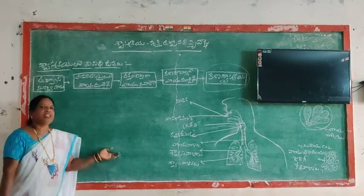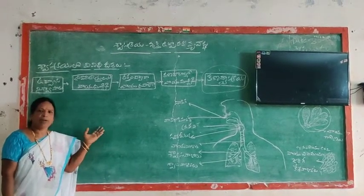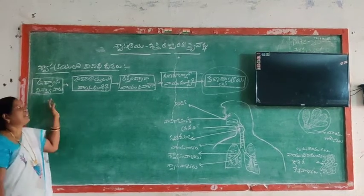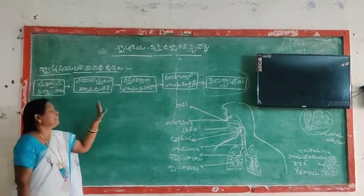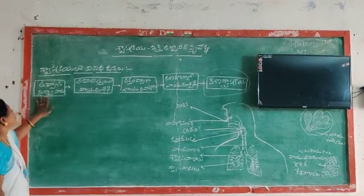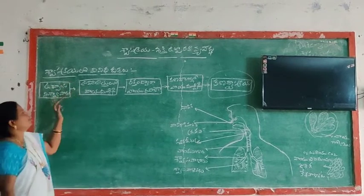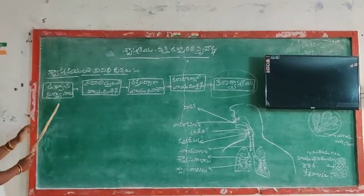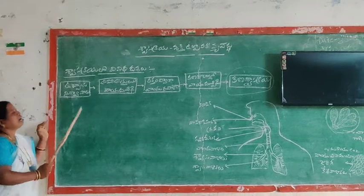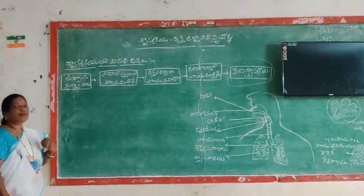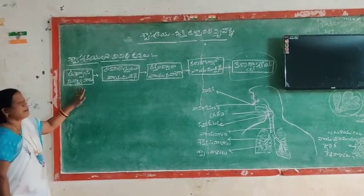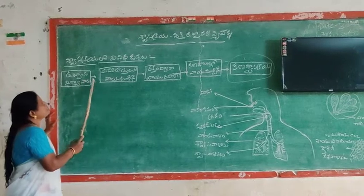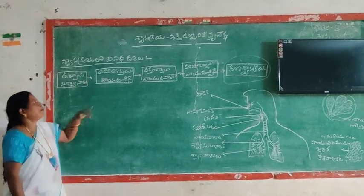Now in the literature you have been thinking about the literature. That is the literature. First, the first thing is to use the first step. The first step is to use the second step. This is the first step. After the step, the next step is to use the second step.